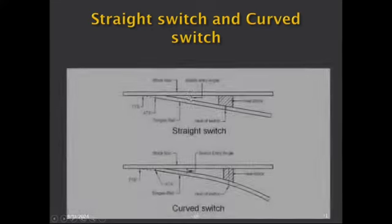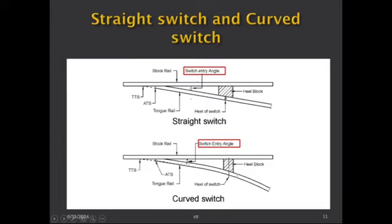For academic interest: as far as a straight switch is concerned, the gauge line of the tongue rail and the gauge line of the stock rail intersect at a point called the TTS — theoretical toe of switch. In practice, we don't have a knife edge at the tip because a wheel hitting it would break it. Instead, some 6mm thickness is ensured at the toe of switch — that point is the actual toe of switch (ATS). The extension of the gauge line intersecting the gauge line of the stock rail is called TTS, while the actual tip is ATS.